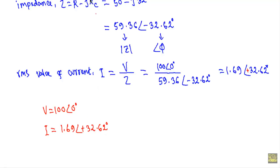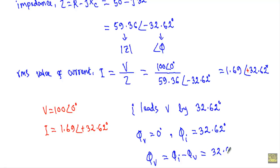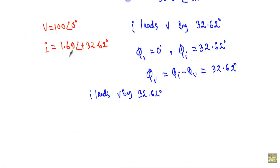Since the phase angle of the current is 32.62 degree and the phase angle of the voltage is 0 degree, the origin of the current is 32.62 degree ahead of the origin of the voltage. Therefore the relative phase angle is 32.62 degree, with current I leading voltage V by this angle.